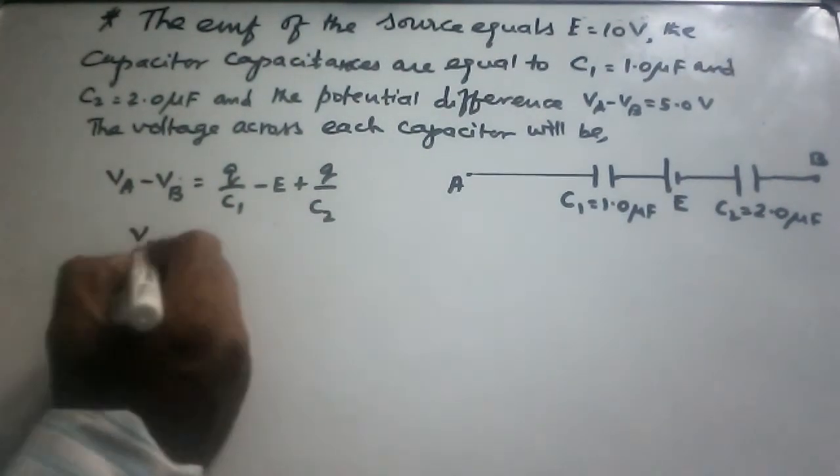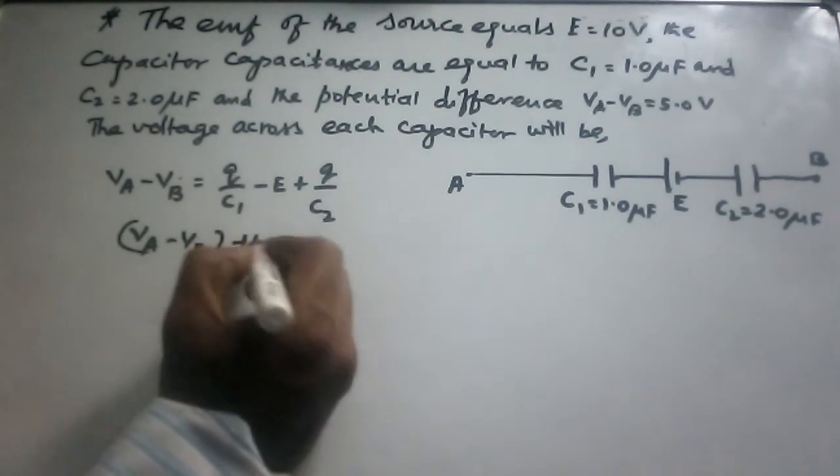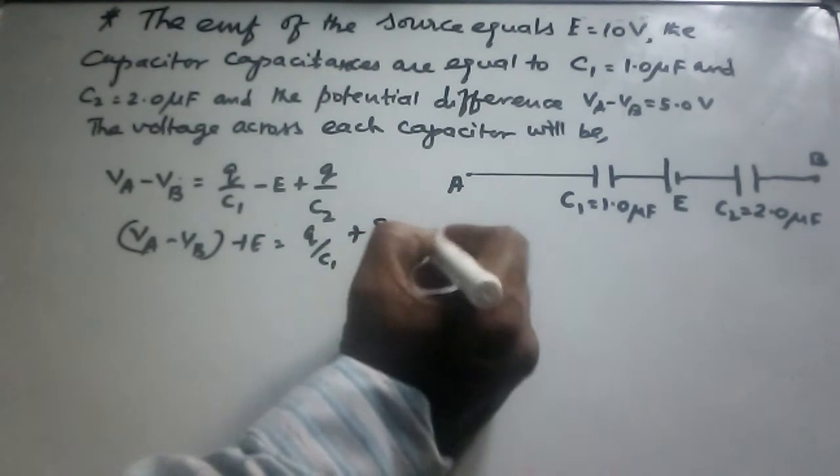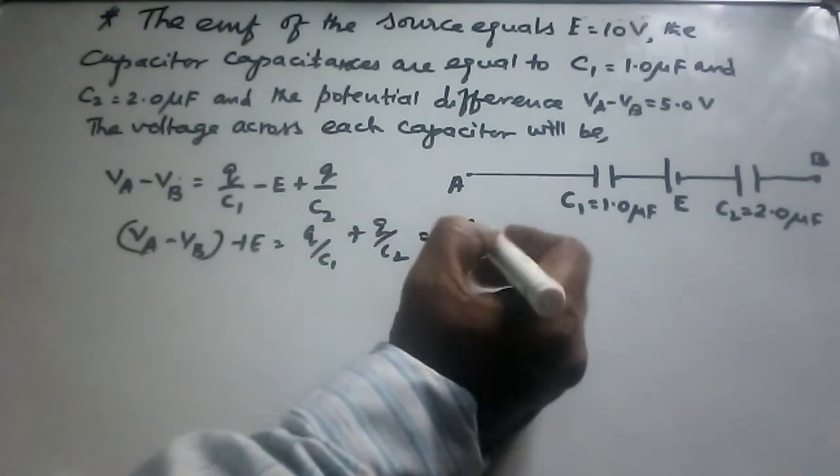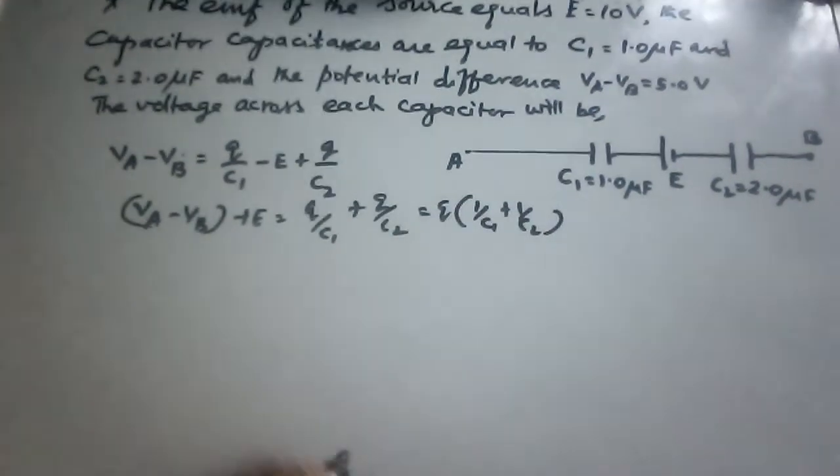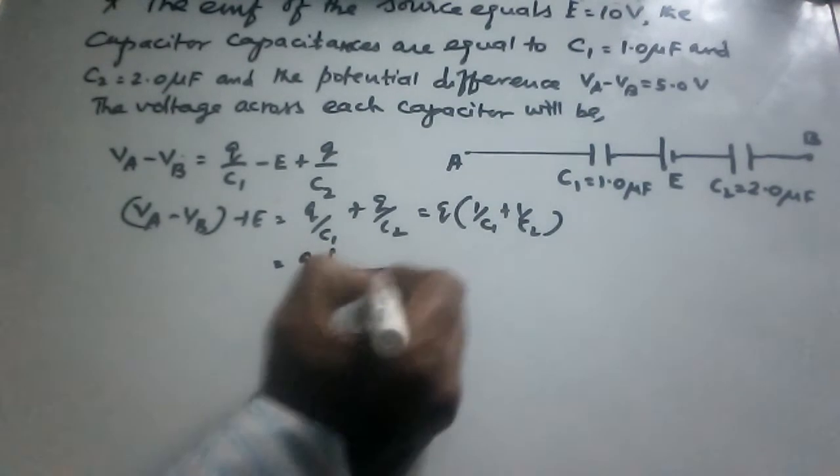So VA minus VB plus E equals Q/C1 plus Q/C2, which equals Q times (1/C1 plus 1/C2). This is also equal to Q times (C1 plus C2)/(C1 times C2).